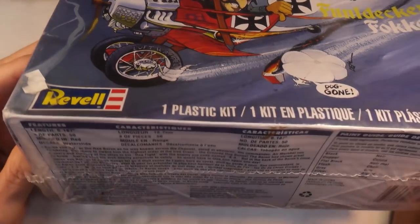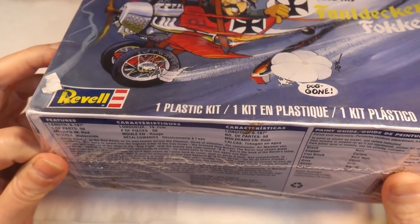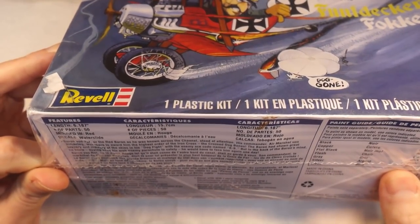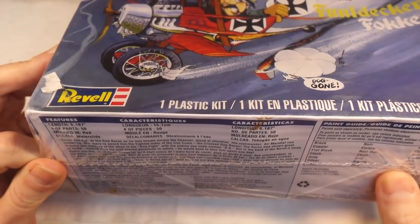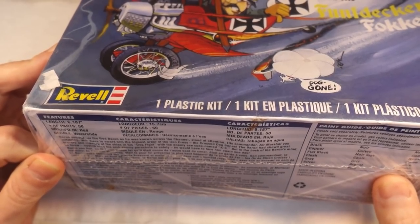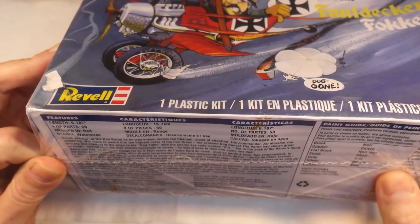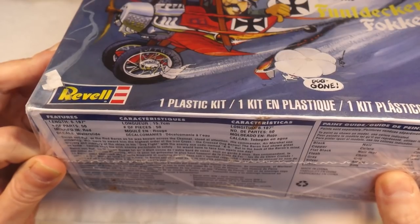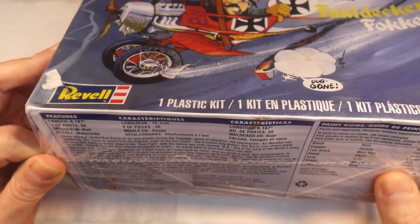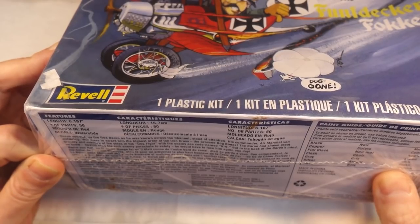There's some blurb on the side of the box. Baron Von Roth, the Red Baron, as he was known across the channel, stood at attention. His commander, Air Marshal Von Blitzkrieg, was here to award him the highest order of the Iron Cross, the Crossed Dog Bones. The Baron had shown great bravery and mastery of the skies in his dogfight with the enemy ace codenamed K9, but in the back of the Baron's mind he knew, having seen his arch enemy parachute to safety, he would have to face him again one day.